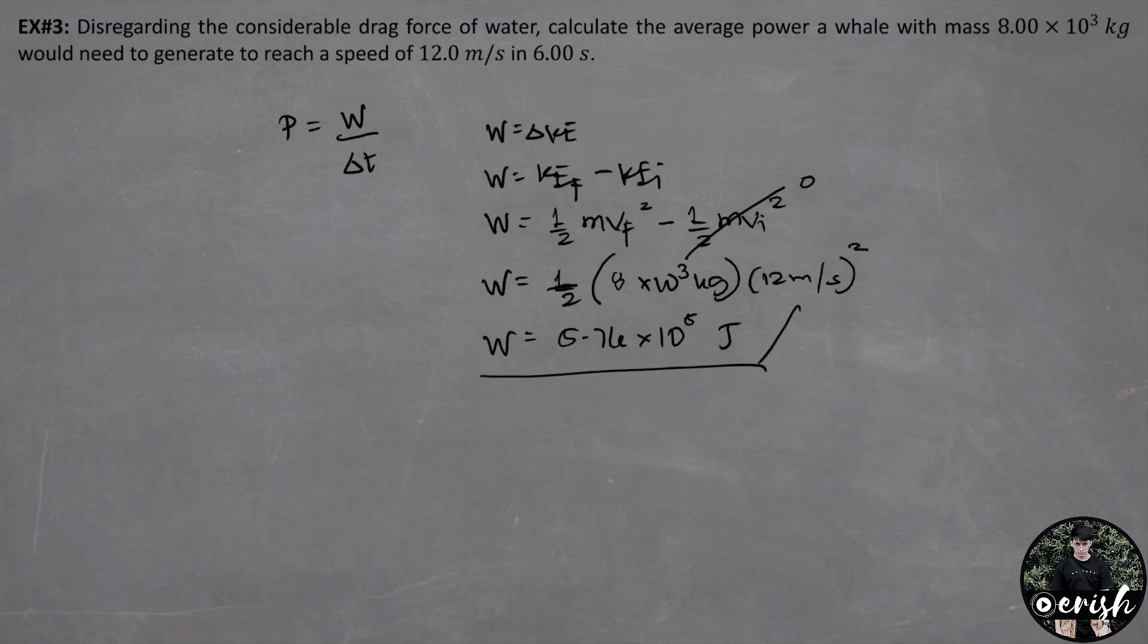This is what we substitute now for the equation to solve for the power. Let's substitute the values. Power is equal to the work which is 5.76 times 10 raised to 5 joules. The time interval given is 6 seconds. And by calculating, the value of the power that needs to be generated by the whale to reach the speed of 12 meters per second after 6 seconds is equal to 96,000 watts.